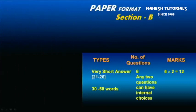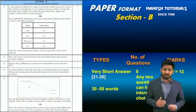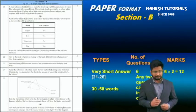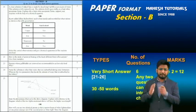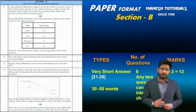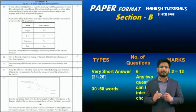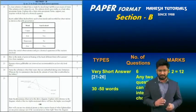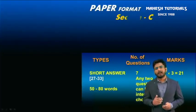Section B has six questions, and any two questions can have internal choices as seen in the sample question paper provided by the board. Each question carries two marks weightage, making up 12 marks total. These are very short answer type questions, so you are supposed to write answers in 30 to 50 words — that basically means four to five points while answering.